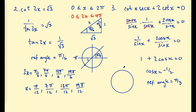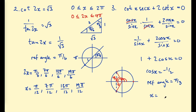Drawing another unit circle: our reference angle is π/3, and cosine is negative, meaning the x-value is negative — so the points on the unit circle have x-coordinate negative 1/2. We're looking for the angle of rotation to those points. The first solution is π minus π/3, which is 2π/3. The second is π plus π/3, which is 4π/3. Those are your final solutions.